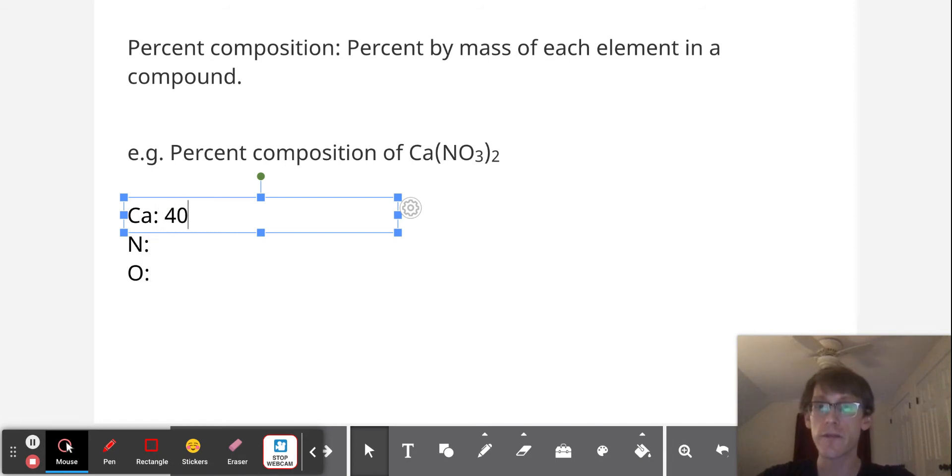The calcium weighs 40.08 grams per mole. The nitrogen weighs 14.01 and the oxygen weighs 16.00. Now, there's only one calcium atom, so the total mass of calcium in calcium nitrate is 40.08 grams per mole.